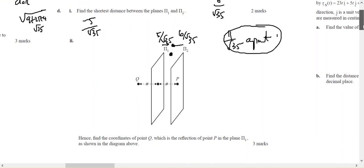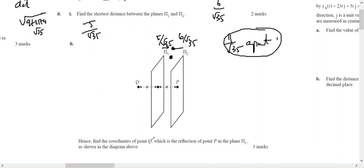In part 2, we find the coordinates of point Q, which is a reflection of point P in plane 1. So if I got point P and I reflected it in that plane, then I know from P to plane 1 is 11 on root 35, and if I'm reflecting it in that plane, it's going to go another 11 on root 35.